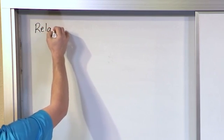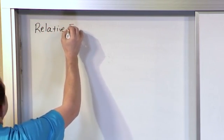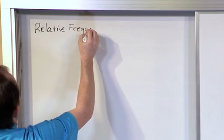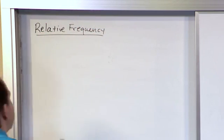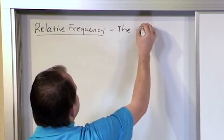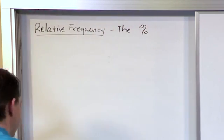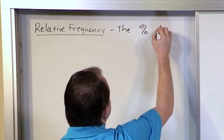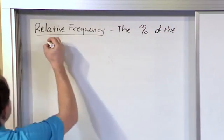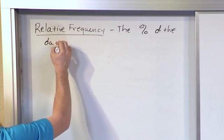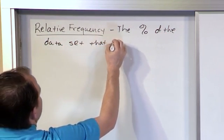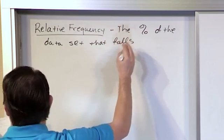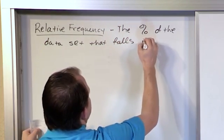It's called the relative frequency. What it is is the percentage of the data set that falls in a class.